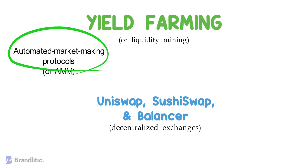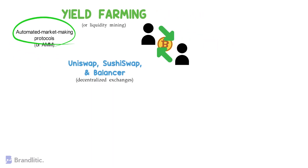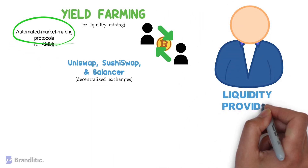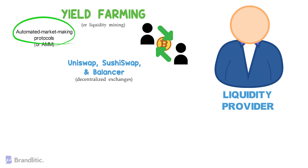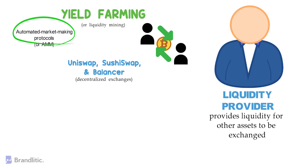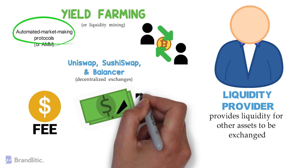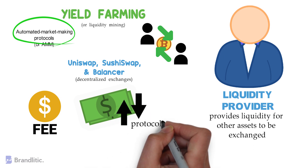Their platforms allow traders to easily swap tokens in a completely decentralized and seamless manner. This complete cycle is made possible by liquidity providers — users who deposit particular crypto assets to the platform, thereby providing liquidity for other assets to be exchanged. Liquidity providers are incentivized to deposit or lock in their assets because they earn transaction fees generated by traders swapping tokens. From the perspective of liquidity providers, these transaction fees are like a yield, and the value of this yield fluctuates depending on the protocol's usage and volume.